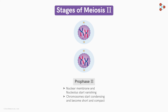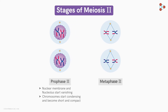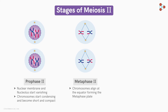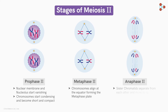The chromatin condenses to become short and compact, gaining a typical chromosome structure. In metaphase II, the chromosomes align at the equator and the spindle fibres attach to the respective sister chromatids. In anaphase II, the chromatids separate from each other and move to opposite poles due to the contraction of spindle fibres.